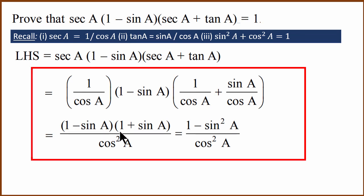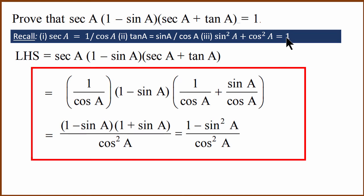Now, (1 minus sin A) multiplied by (1 plus sin A) is of the form (A minus B)(A plus B), which equals A squared minus B squared. In this case, that gives us 1 squared minus sin squared A, which equals 1 minus sin squared A.